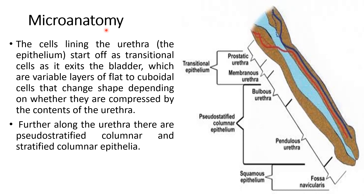About the general microanatomy of the urethra in both males and females: the urethra is lined by epithelium. It starts as transitional epithelium. In the male urethra, the first two portions — prostatic and membranous urethra — are lined by transitional epithelium. These are called transitional because the cells are able to change their shape from flat to cuboidal, depending on whether they are distended by the contents of the urethra. After that, the urethra is lined by pseudostratified columnar epithelium in the middle portion, and then stratified squamous epithelium in the distal portion.